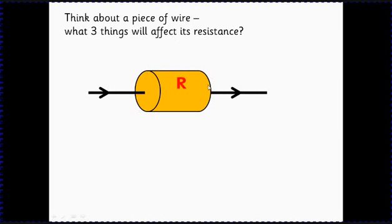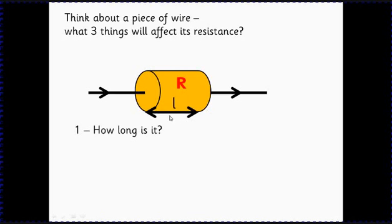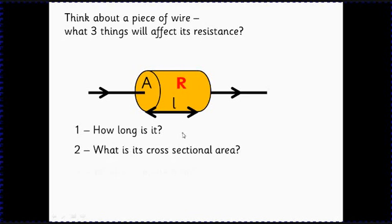Imagine a piece of wire — what is going to affect its resistance R? Hopefully you can think about that and work out that it's going to matter how long the wire is, what its cross-sectional area is — you might say the diameter or the radius — and obviously what it's made from, since different sorts of materials have different resistivities.